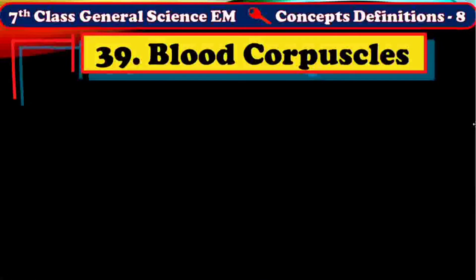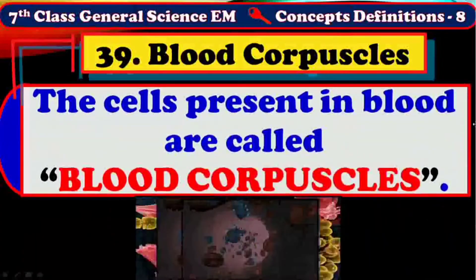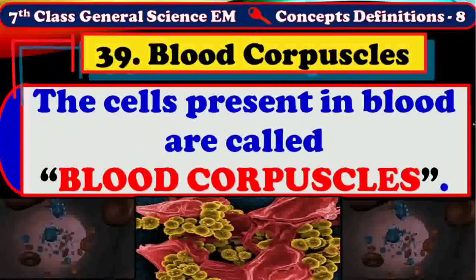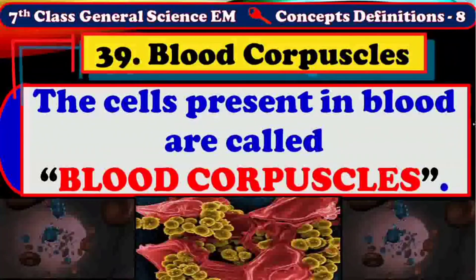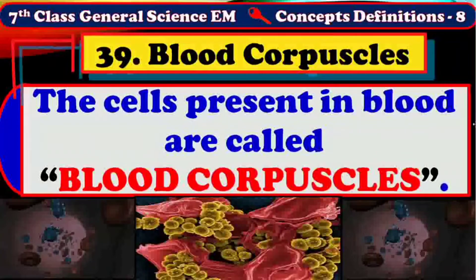Marcello Malpighi was the first scientist who discovered blood capillaries in frog lungs. The cells present in blood are called blood corpuscles, also called blood cells, hematopoietic cells, hemocytes, or hematocytes. RBC or erythrocytes, WBC or leukocytes, and blood platelets or thrombocytes are the three major types of blood corpuscles. These blood corpuscles constitute 40 to 45% of blood. The Dutch naturalist Jan Swammerdam was the first person to observe blood corpuscles.